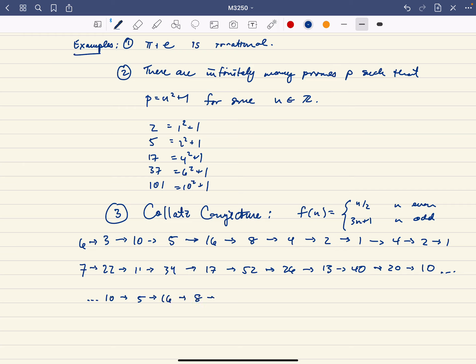And then once you get to a power of 2, you're all set: 8, 4, 2, 1. And so here we ended up with a 1, here we ended up with a 1. That's the conjecture, is that no matter what positive integer you start with, you're going to end up with a 1.